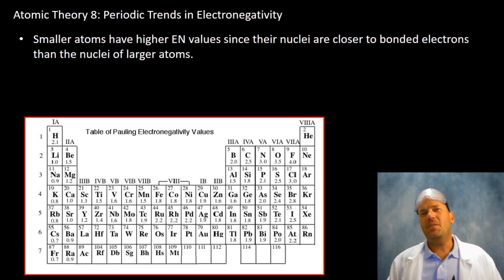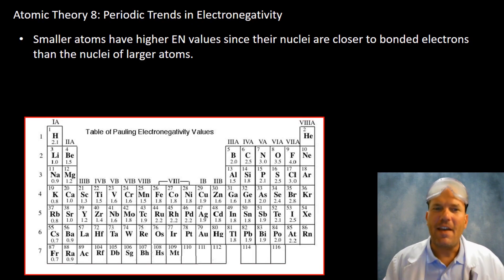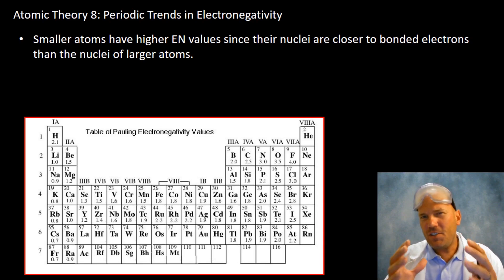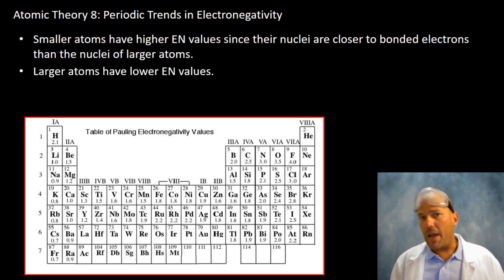Smaller atoms are going to have higher electronegativity values. This should make sense. Their nuclei with the protons are closer to the bonded electrons than the nuclei of larger atoms. Larger atoms are going to have lower electronegativity values.